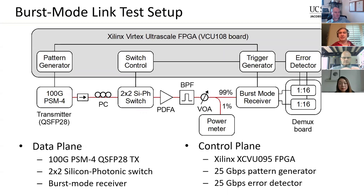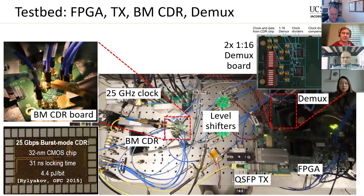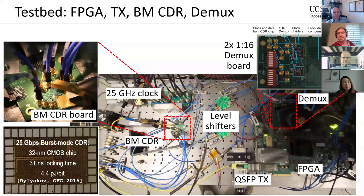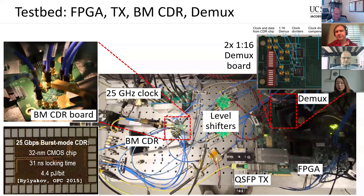The test setup used a burst-mode receiver chip from IBM and a 2x2 silicon photonic switch, connected to a Xilinx Virtex UltraScale FPGA. The FPGA generated test data sent through the devices, controlled the switch, triggered the burst-mode receiver, and collected data to count bit errors. The QSFP commercial transmitter output goes up to the switch, comes back down to the burst-mode receiver, through level shifters, then to a custom-built demultiplexer board that brings the CDR chip output back into the FPGA without going through the FPGA serializers, which have their own locking time.